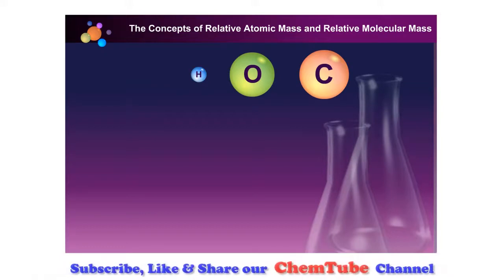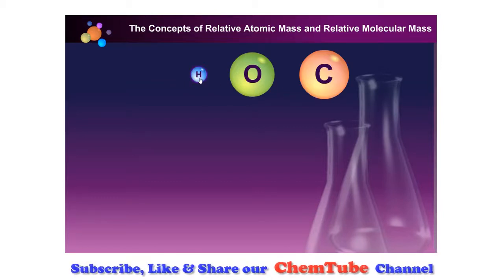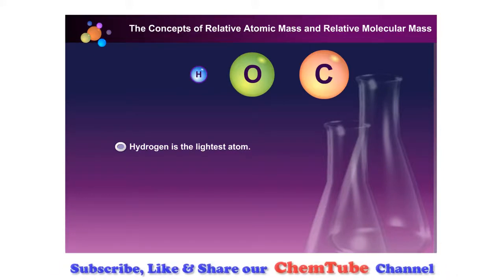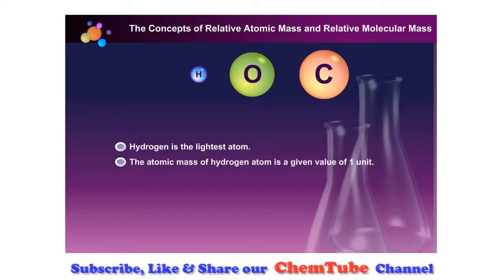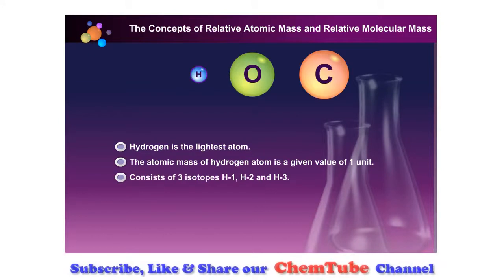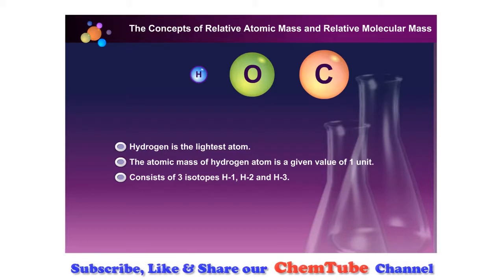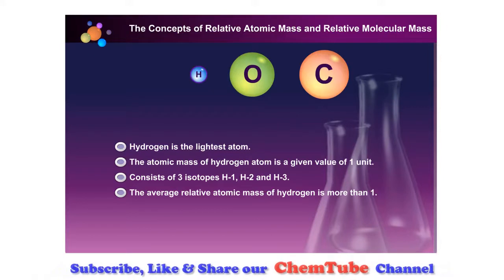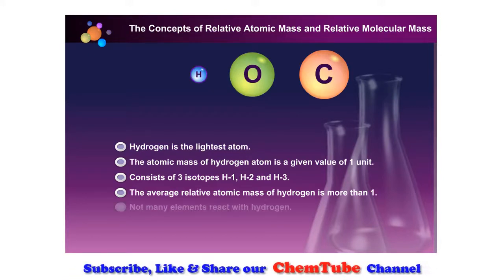Scientists have used three elements as a standard. Click on the elements. Since hydrogen is the lightest atom, chemists started comparing masses of different atoms to hydrogen. The atomic mass of the hydrogen atom is given a value of one unit. Hydrogen consists of three isotopes: hydrogen-1, hydrogen-2, and hydrogen-3. The average relative atomic mass of hydrogen is more than one.